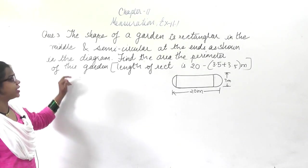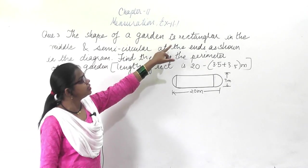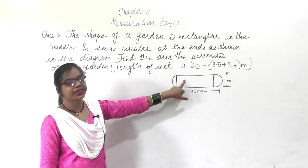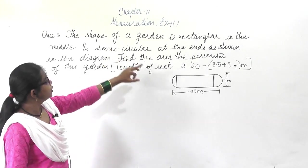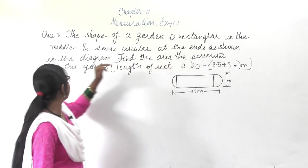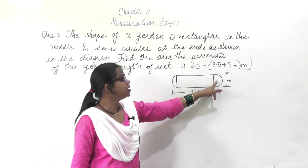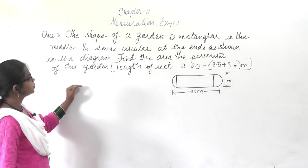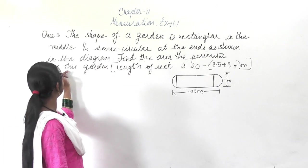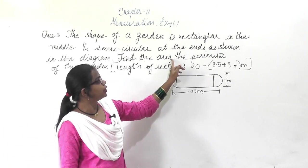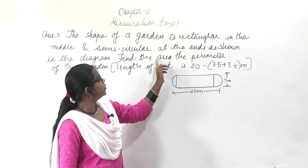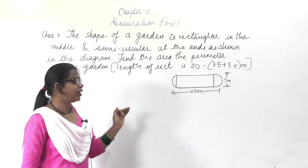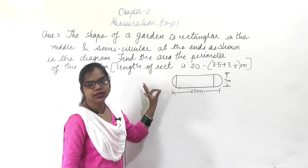This is the next question. In this question it is saying the shape of a garden is rectangular in the middle with semicircles at the ends as shown. These two are semicircles and this is forming a rectangle. You have to find the area and the perimeter of this total garden.